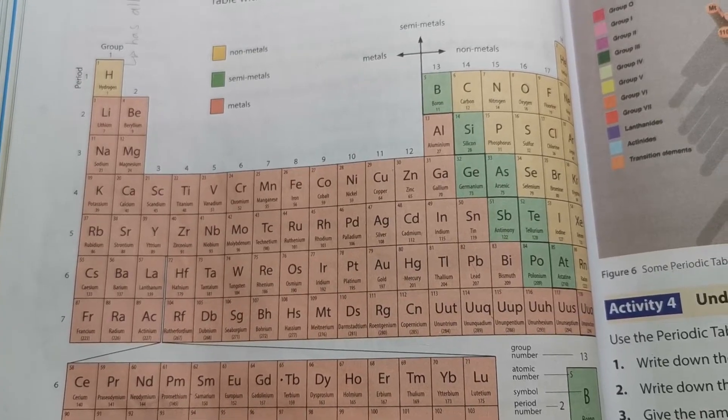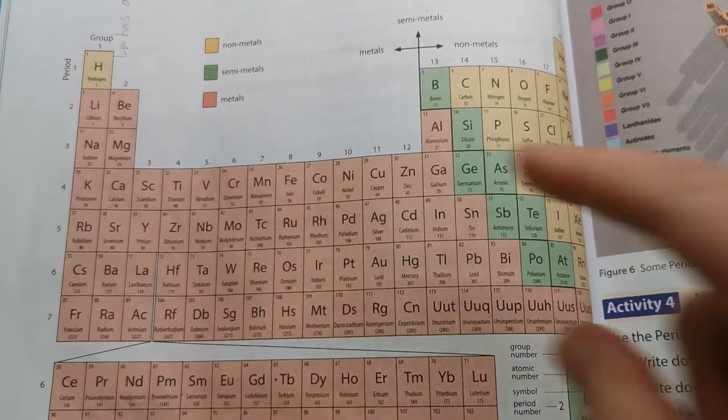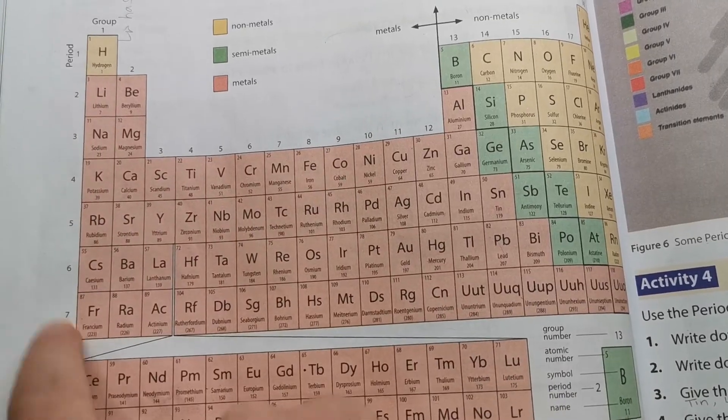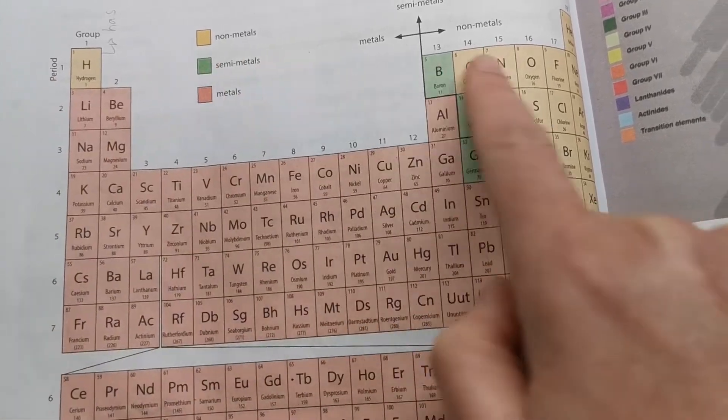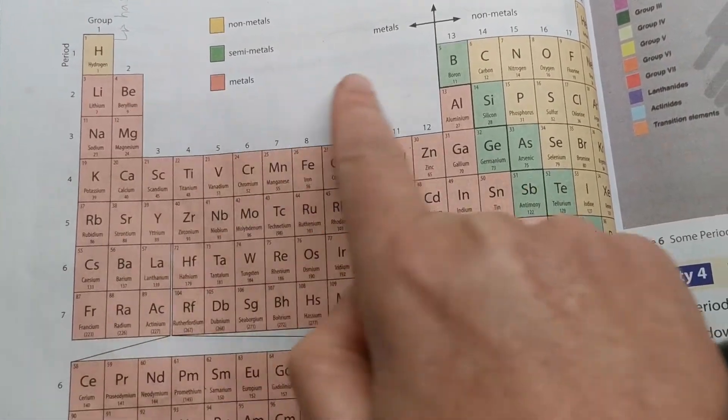Well, there's two main important things that you need to know. Can you see you've got numbers on the side over here? Number one is period. These are all going across.